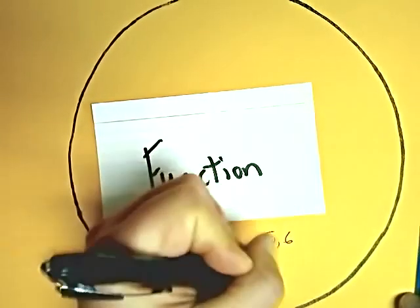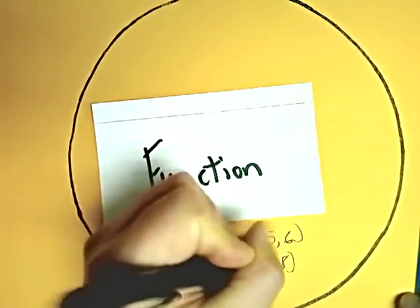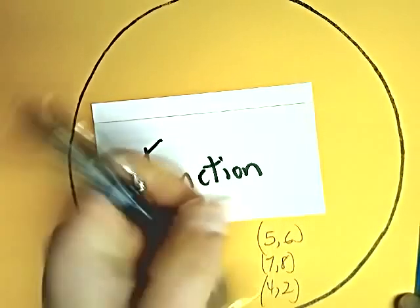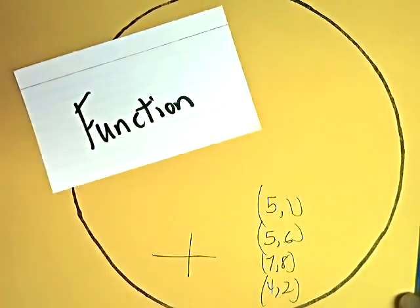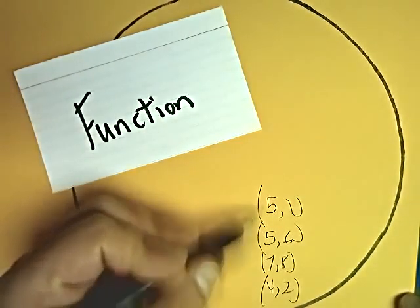Say I have 5, 6, 7, 8, 4, 2, and 5, 1, these are my domains right here.